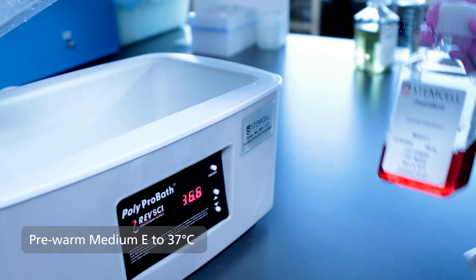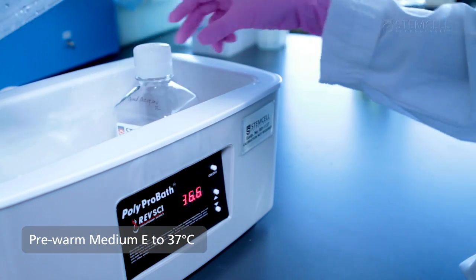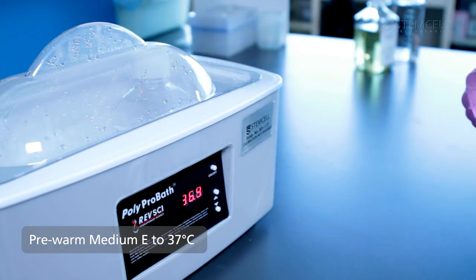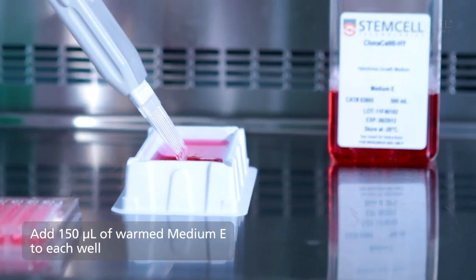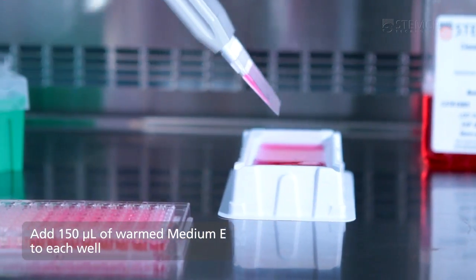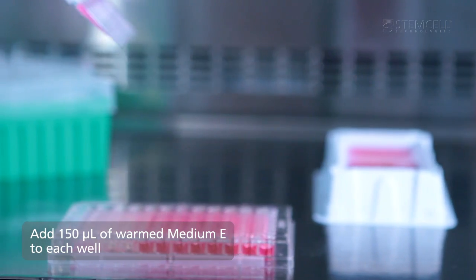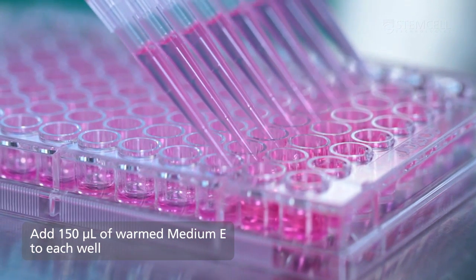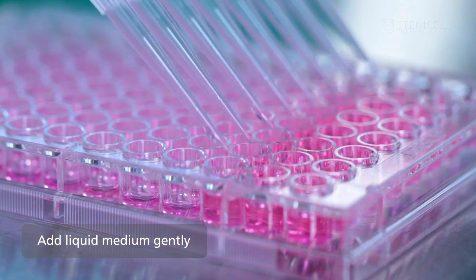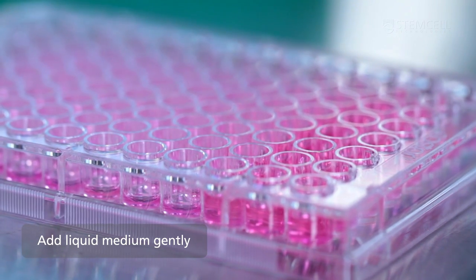Pre-warm medium E to 37 degrees Celsius. Gently add 150 microliters of warm medium E to each well that contains colonies. Medium E can also be added to all wells, regardless of whether there are colonies.